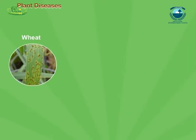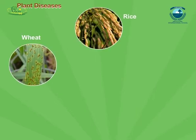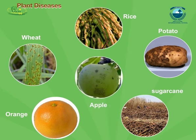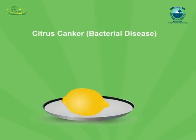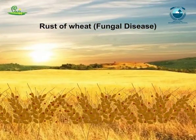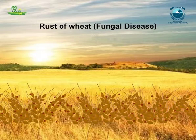Several microorganisms cause diseases in plants like wheat, rice, potato, sugar cane, orange, apple, and others. These diseases reduce the yield of crops. Citrus canker is a disease of citrus fruits caused by bacteria; white spongy spots turn grey or tan and finally develop into holes. This disease spreads through air. Rust of wheat is a fungal disease that produces reddish-brown spore masses in oval pustules on leaves or stems, which turn black in later stages. This disease also spreads by air.